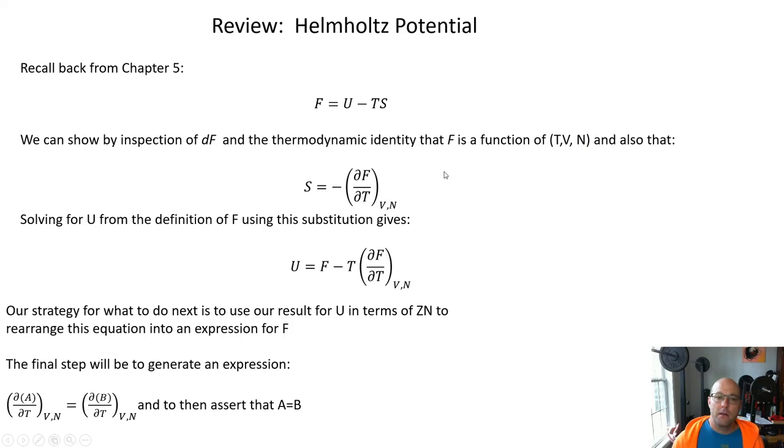And so by direct inspection of the differential of F and applying the thermodynamic identity you can see that F is a function of T, V and N and you can also by direct inspection of the coefficients of the differential note that entropy has to equal the negative partial derivative of F with respect to temperature at constant V and N. So we can just sub in and solve for internal energy U and we get this expression. And so this is the expression that we're going to use to derive our relationship between partition function and Helmholtz.